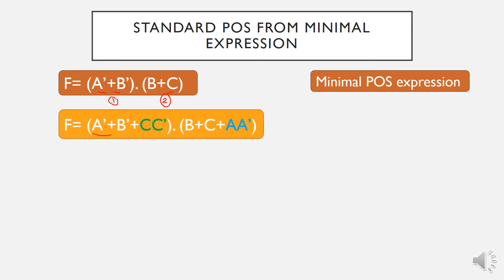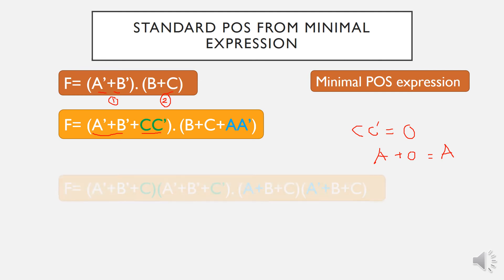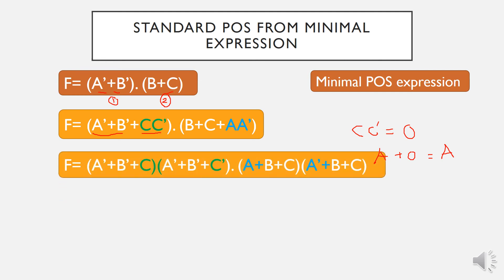The original expression has the missing variable added in. Since C AND C-bar equals 0 by the identity law, adding it does not change the original expression. Similarly, adding A AND A-bar to the second term does not alter it. When we expand the equation, we obtain four different sum terms: A-bar OR B-bar OR C, A-complement OR B-complement OR C-bar, and so on — four terms total.